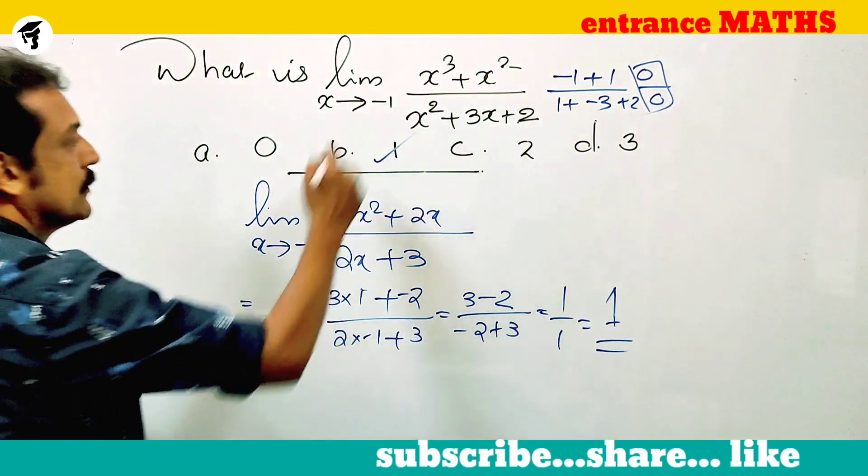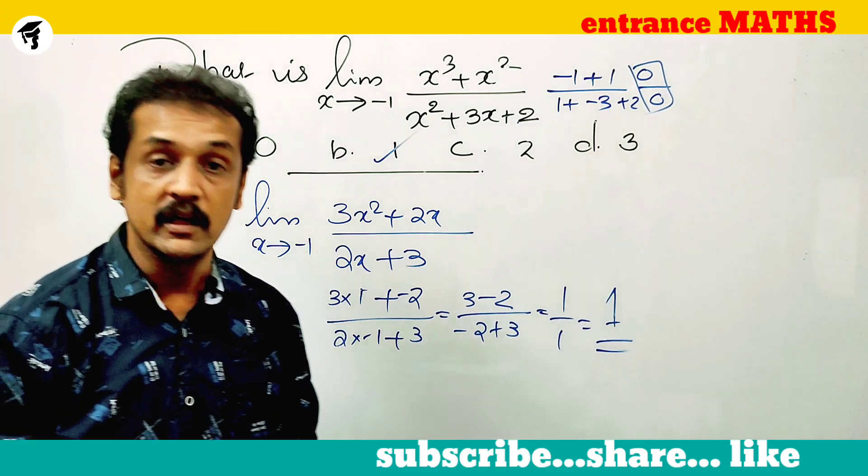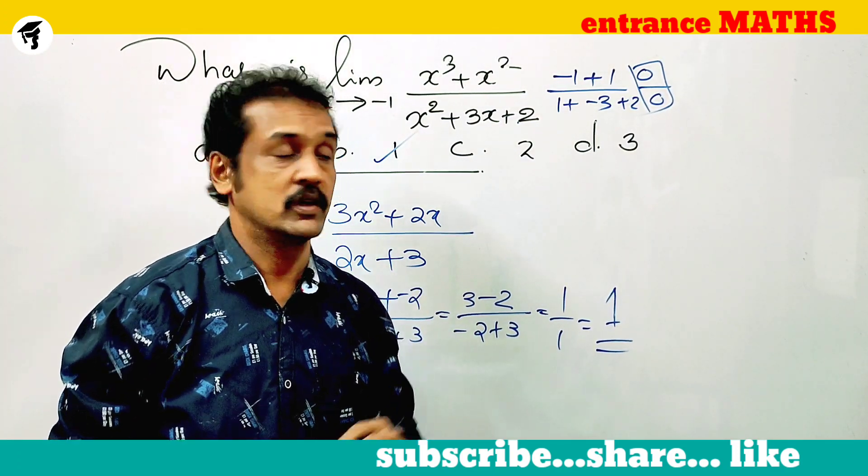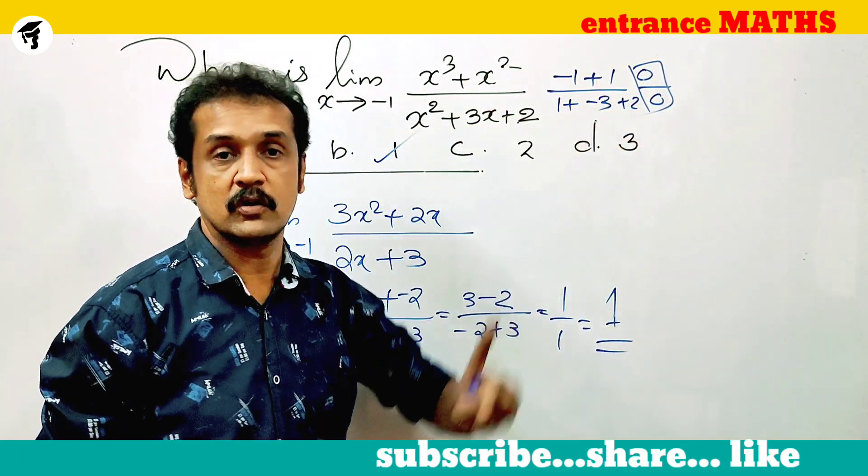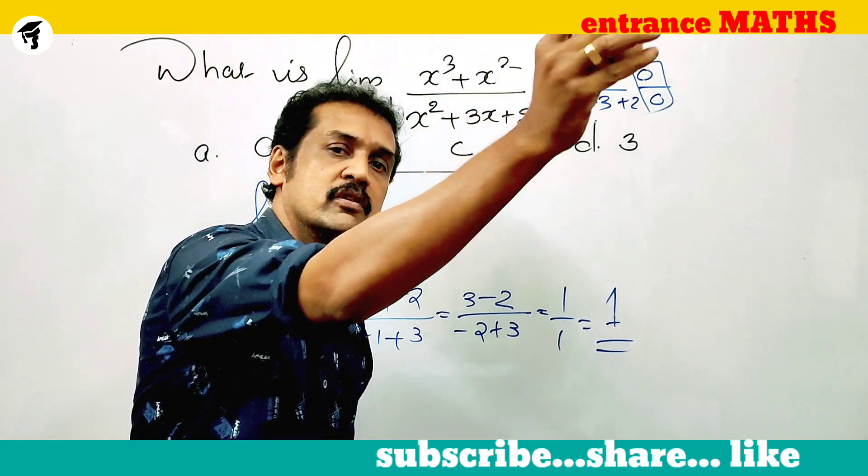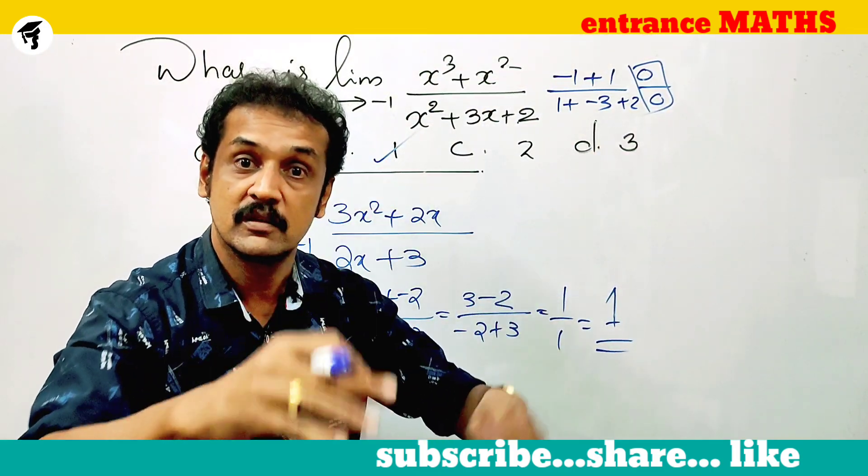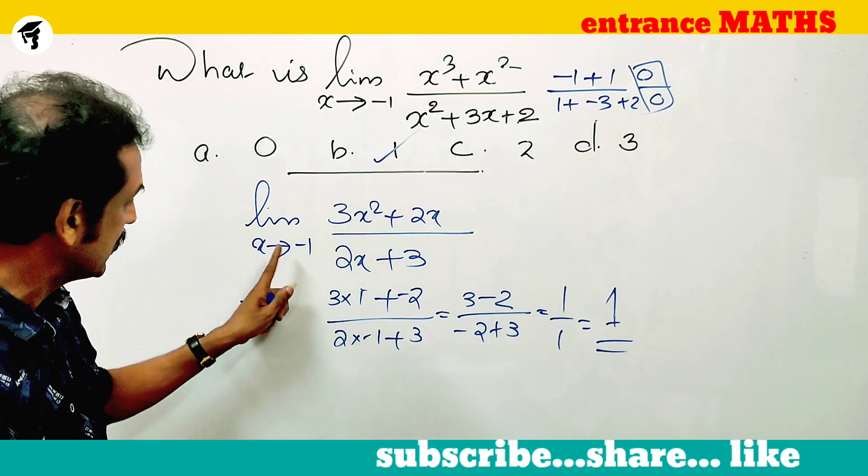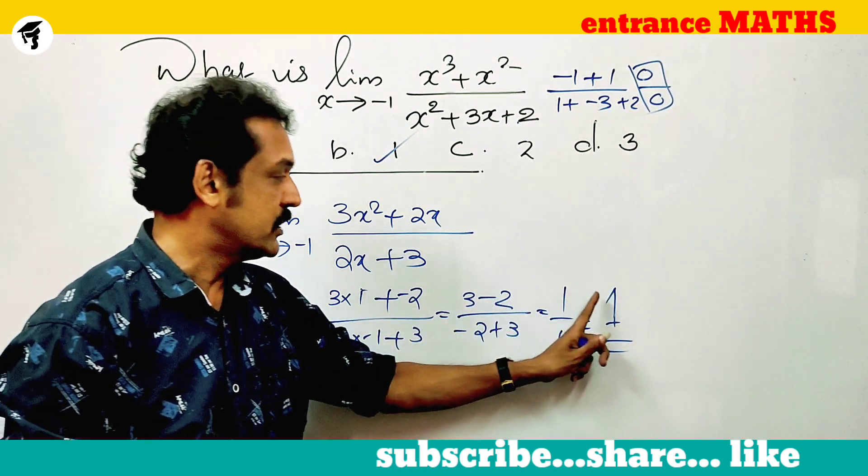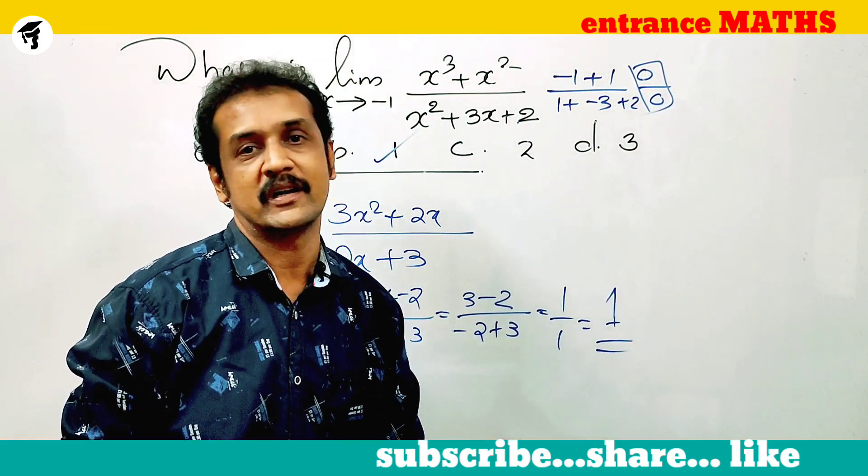Now, let's review L'Hospital's rule. First, 0 by 0 case. Numerator derivative by denominator derivative. Substitute x equals minus 1. We get the answer.